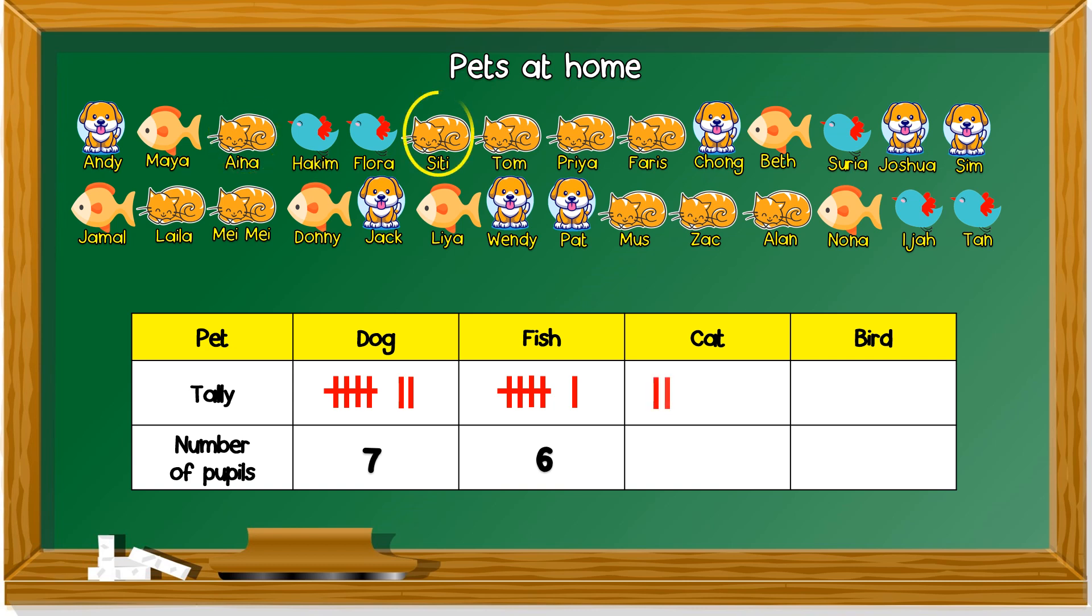How about cat? One, two, three, four, five, six, seven, eight, nine, and ten. So, there are ten pupils that have cats.